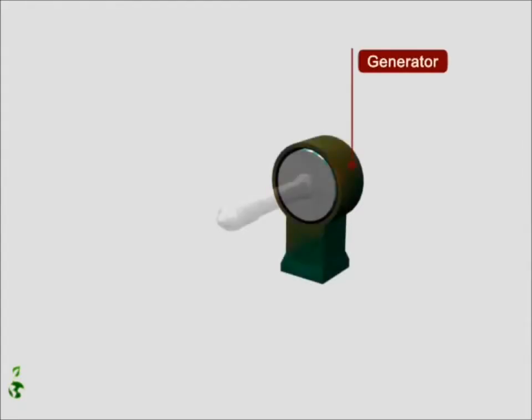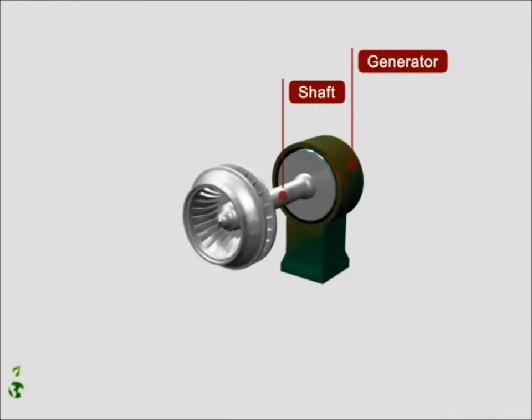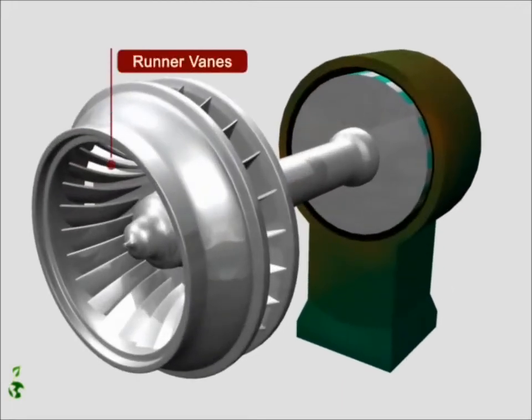The generator, which produces electricity, is connected through a shaft to the runner of the turbine. The runner is composed of runner vanes that are curved.